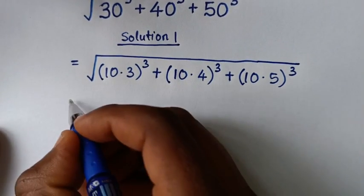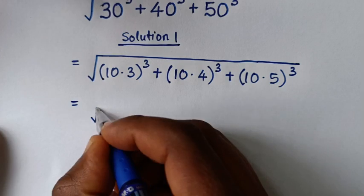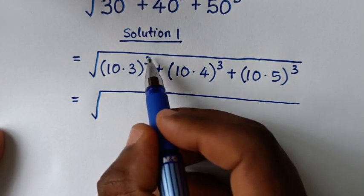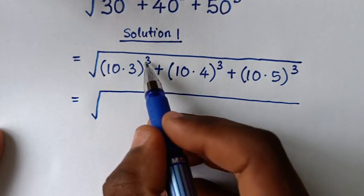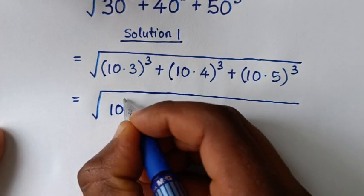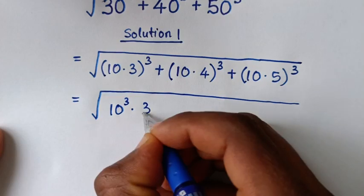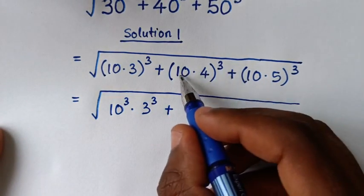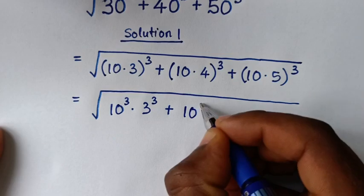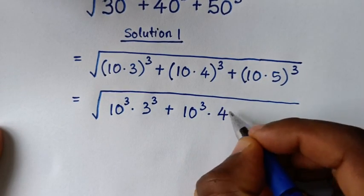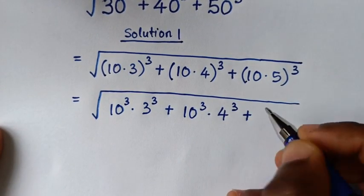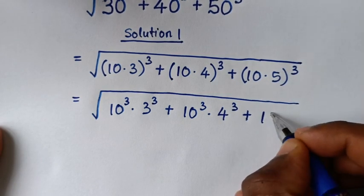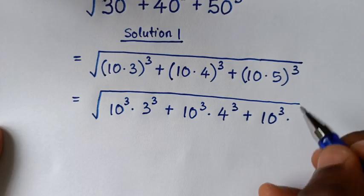In the next step, we take the power 3 inside each bracket. So it will be equal to the square root of: 10 to the power 3 times 3 to the power 3, plus 10 to the power 3 times 4 to the power 3, plus 10 to the power 3 times 5 to the power 3.